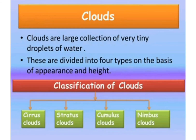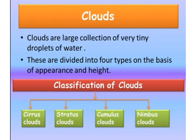Children, are you interested in seeing the clouds in the sky? We all like to watch them change shape, isn't it? Then tell me — what are clouds? Clouds are large collections of very tiny droplets of water. These are divided into four types on the basis of appearance and height. They are cirrus clouds, stratus clouds, cumulus clouds and nimbus clouds.